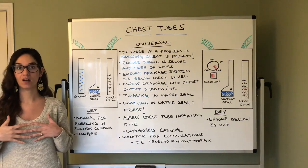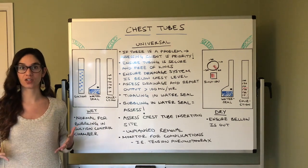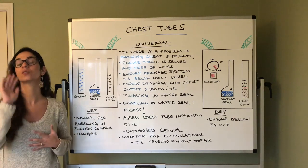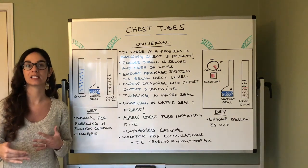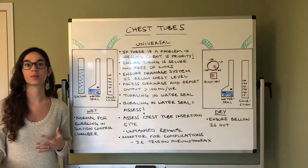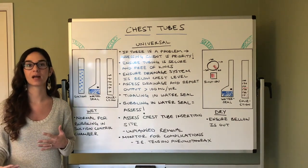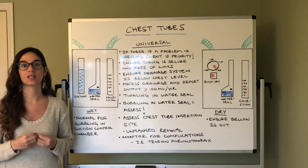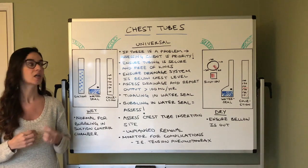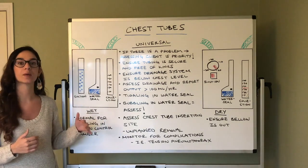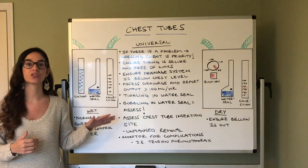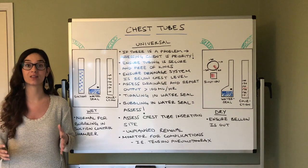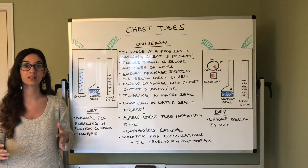Then when we exhale, because the pressure gets too much, we exhale to release carbon dioxide. So we breathe via negative pressure. The whole purpose of a chest tube is to maintain negative pressure in our lungs.